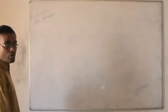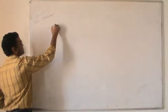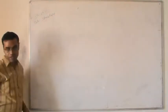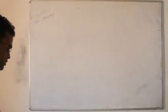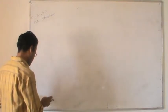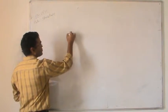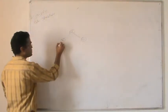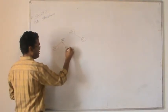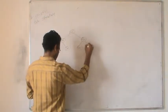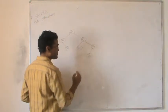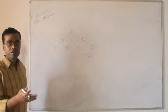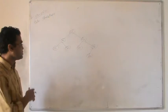Now let's look at an example to understand the balance factor calculation. Suppose we have a tree with nodes 45, 36, 66, 27, 39, 44, 72, 70. This is a BST where all values less than the root are in the left subtree and all values greater are in the right subtree. One additional variable — the balance factor — is associated with every node.